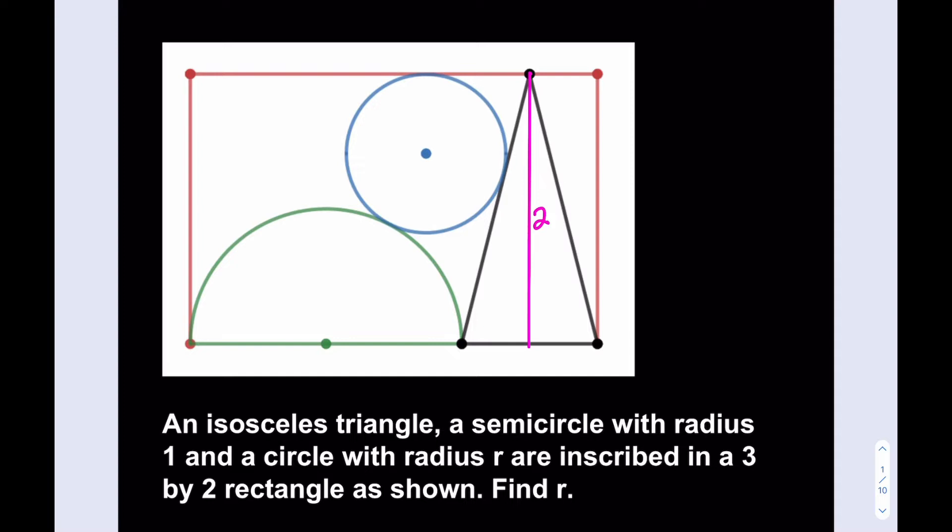And I know that this is a 2, because that's given. It's a 2 by 3 rectangle. What else do we know? Well, we know that the base of the rectangle is 3, and the radius of the semicircle is 1. So we have 1 left, so these little pieces here is going to be 1 half each.